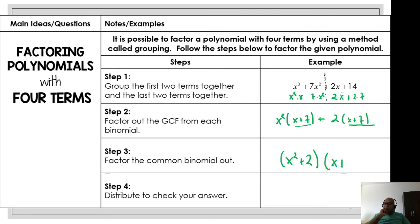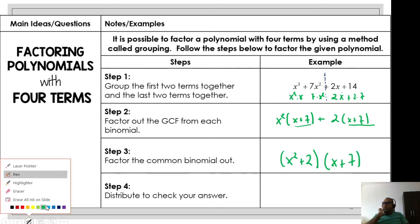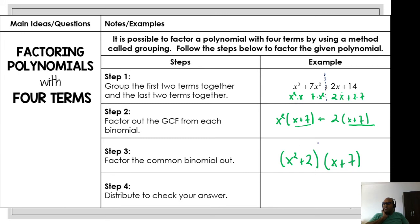Since we have the same factor (x + 7) in both terms, we can write the final answer as (x² + 2)(x + 7). Let's check by distributing: x² · x = x³, x² · 7 = 7x², 2 · x = 2x, 2 · 7 = 14. Yes! That matches the original — no way, it works!